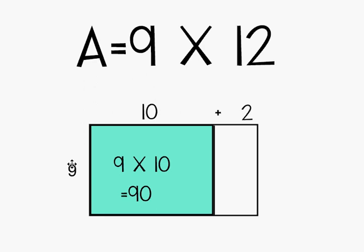So first, I'm going to multiply the length and width of this smaller rectangle. 9 times 10 is 90. So this part of our larger rectangle is 90.